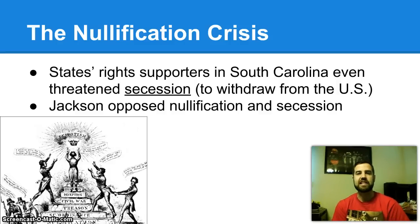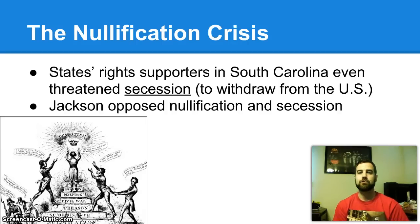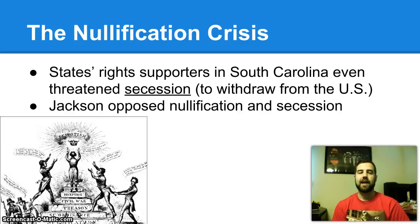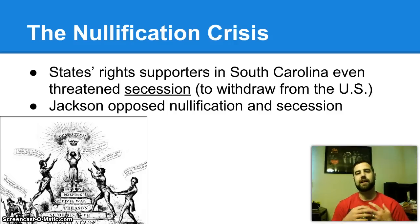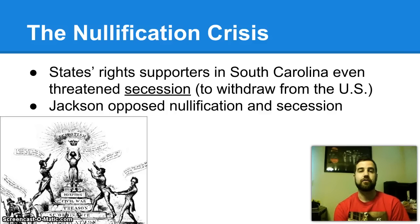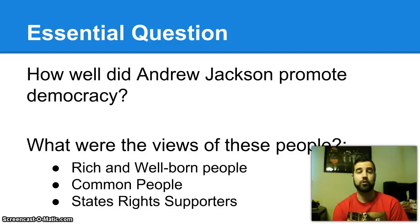Leaving the union is called secession, or to secede. Andrew Jackson responded by essentially threatening that the first person he caught in South Carolina acting on that would be hanged from a tree. He threatened to send troops into South Carolina to ensure people paid their taxes, and it worked — the people of South Carolina relented. Even though Jackson was born in South Carolina and believed in states' rights, he believed the union was paramount and that no single state could simply leave the country. This foreshadowed future conflicts in the United States.